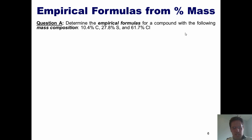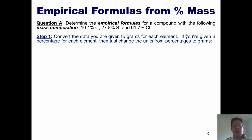We go through our steps. Step one, convert everything you're given into grams. If you're given percents, just change the percent sign into grams straight across. So we're going to assume that if we had a 100 gram sample, 10.4 grams would be carbon, 27.8 grams would be sulfur, and 61.7 grams would be chlorine.